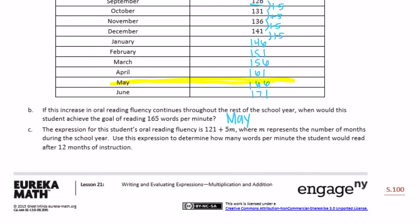Part C: The expression for this student's oral reading fluency is 121 plus 5M, where M represents the number of months during the school year. Use this expression to determine how many words per minute the student would read after 12 months of instruction. So 121 plus 5 times 12: five times 12 is 60, and 121 plus 60 would be 181 words per minute.